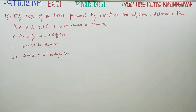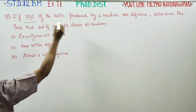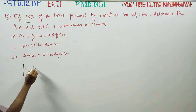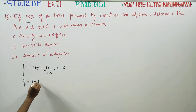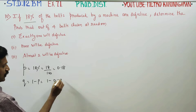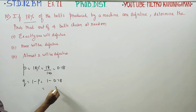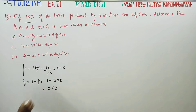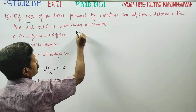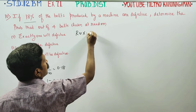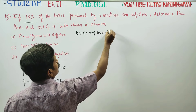Dear 12th standard business mathematics students, in Exercise 7.1: If 18% of bolts produced by a machine are defective, determine the probability out of 4 bolts chosen at random. P (defective) is 18% = 18/100 = 0.18. Q is equal to 1 minus P = 1 minus 0.18 = 0.82. Q is the probability of non-defective. The random variable X is the number of defective bolts.